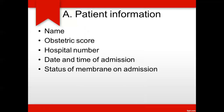In patient information, you write the name of the patient and her obstetrical score — gravida, para, whether abortions are there or not, deaths, and term deliveries. The IP number of the patient has to be written, along with date and time of admission, and the status of the membranes — whether the membranes are ruptured or still intact on admission.